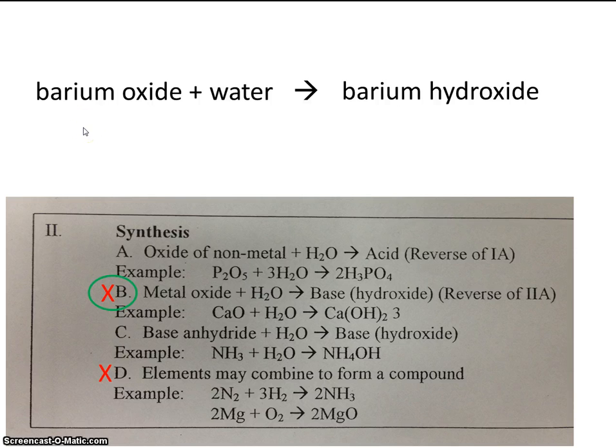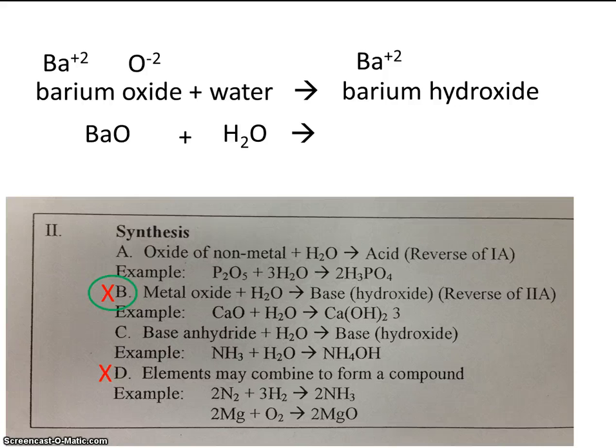So, now, let's write the formula. Using your periodic table, you'll notice that barium has a charge of plus 2, and oxide is minus 2. So, the formula is BaO. Water is, of course, H2O. And once again, barium is plus 2. Hydroxide is minus 1. So, the formula should be written like this.